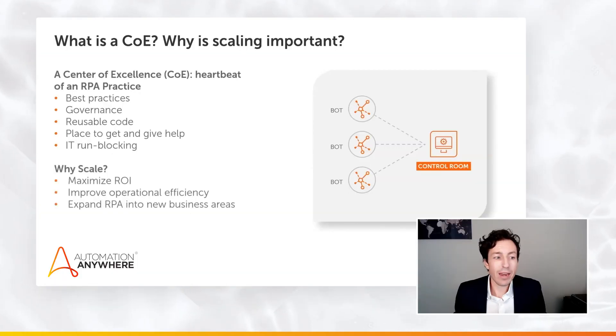When I think of IT run blocking, I also think of things like change management — working with the change management team on how and when we're going to do releases, and how we might need to be more flexible or agile in the way we do releases more regularly. I also think of working with groups like cybersecurity to make sure they understand what RPA is, how it's being used, and how we might need service accounts set up to interface with different applications internally. All of that enables scaling.